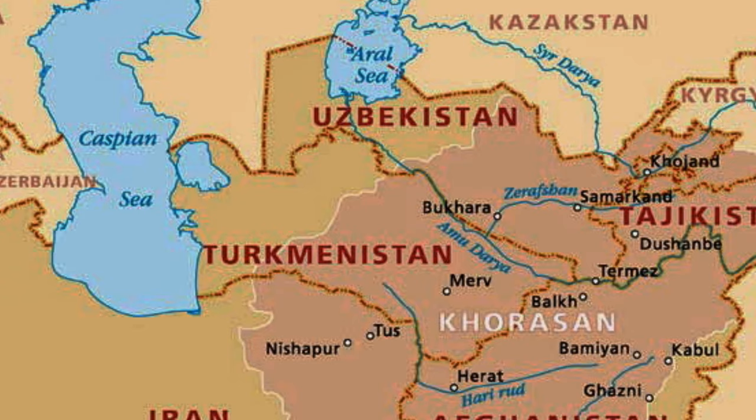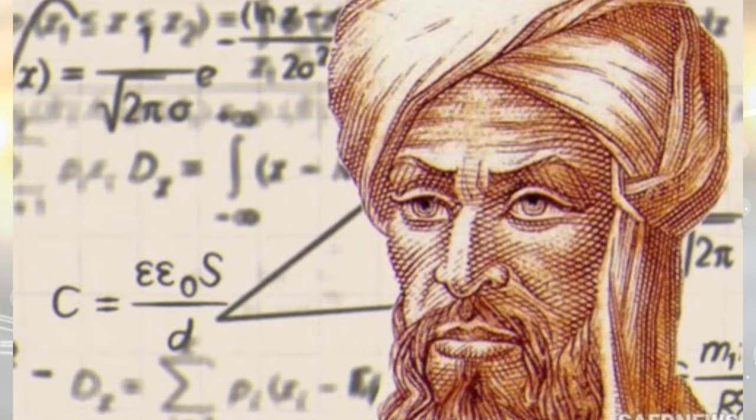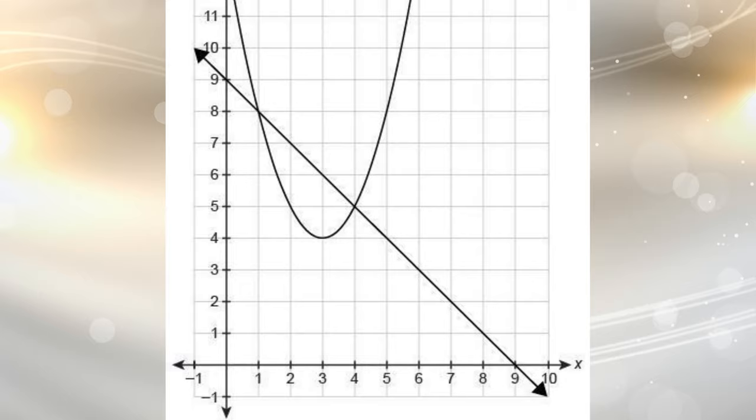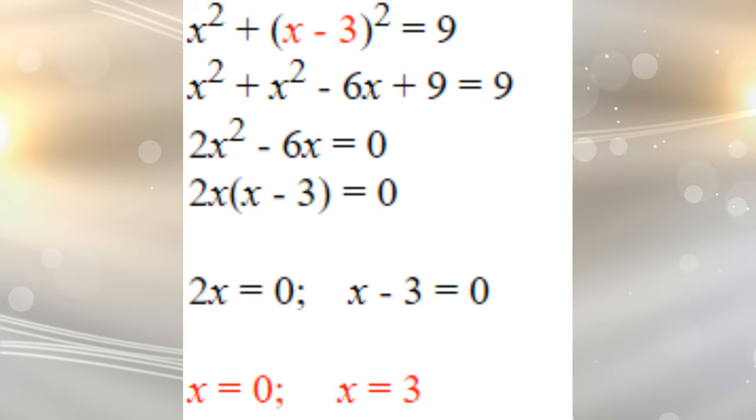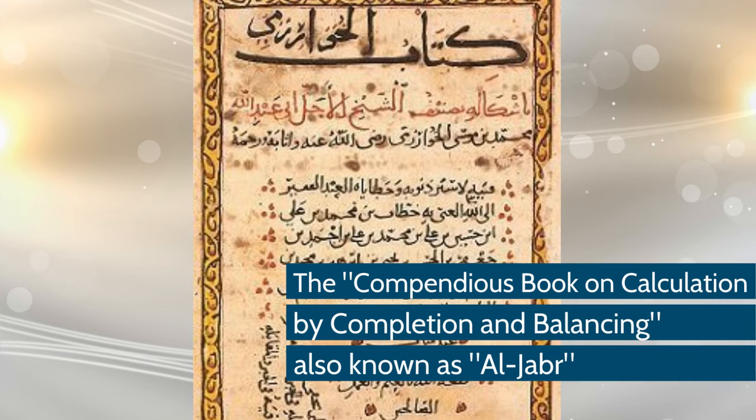Al-Khawarizmi has been described as the father of algebra and algorithms. Al-Khawarizmi's contributions to mathematics, geography, astronomy and cartography established the basis for innovation in algebra and trigonometry. His systematic approach to solving linear and quadratic equations led to algebra, a word derived from the title of his book on the subject, The compendious book on calculations by completion and balancing.